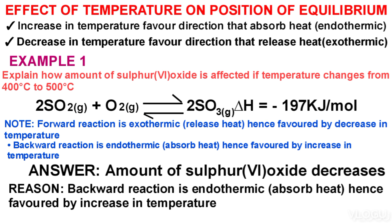If the question was asking how the amount of SO₃ is affected if temperature is decreased, then you would say the amount of SO₃ increases. The reason is the forward reaction is exothermic, hence favored by a decrease in temperature. Or you can say equilibrium shifts from left to right because a decrease in temperature favors the direction that releases heat, i.e., the exothermic reaction.